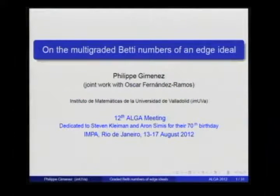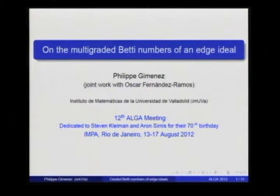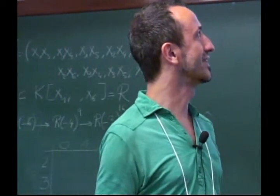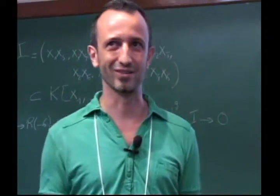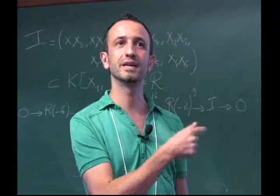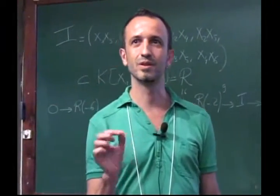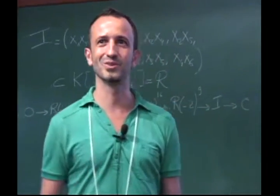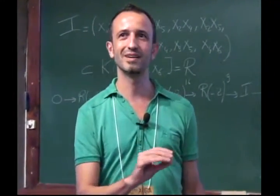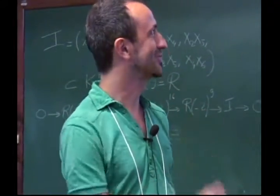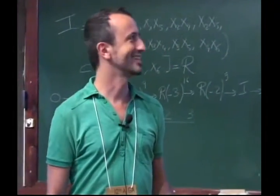This is a joint work with Oscar Fernandez, who is finishing his PhD thesis now. Even if it's not a joint work with Aaron, he has to do with the work anyway, as edge ideals came from him and Raphael Villarreal. Also, the very beginning of this story started with a small question in our joint work on polar syzygies with Isabelle, and then the thesis of Oscar grew from that.